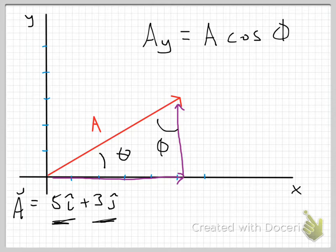Now it's A times the cosine of phi. And that should make some sense to you, because the sine of theta is equal to the cosine of phi, if theta and phi sum up to 90 degrees, or pi over 2, if you want to do it that way. And they do,